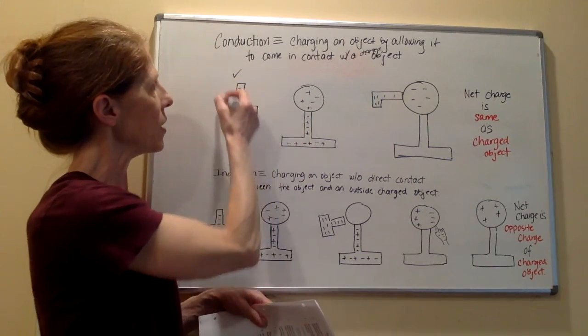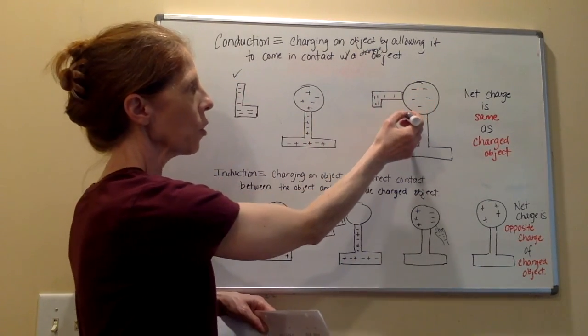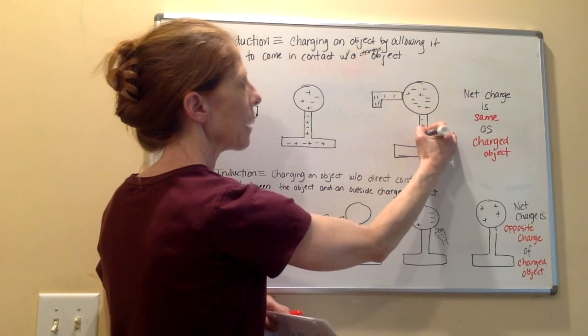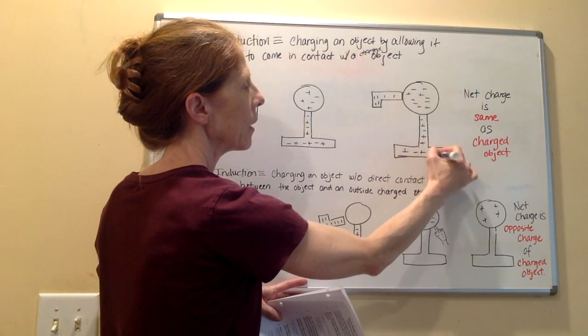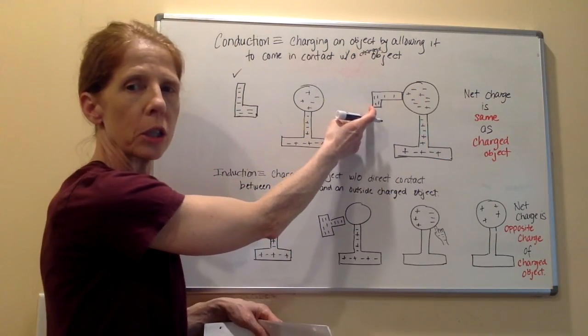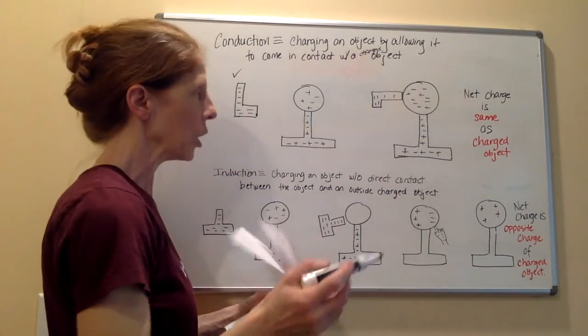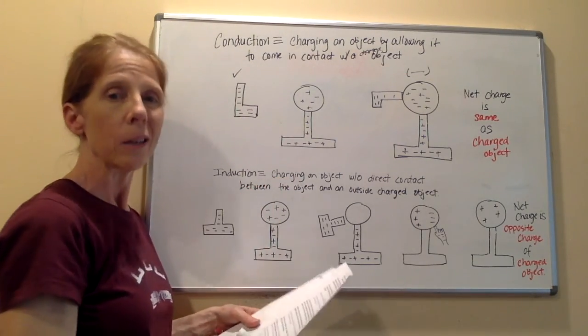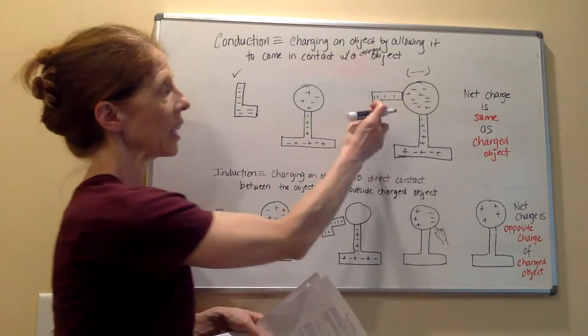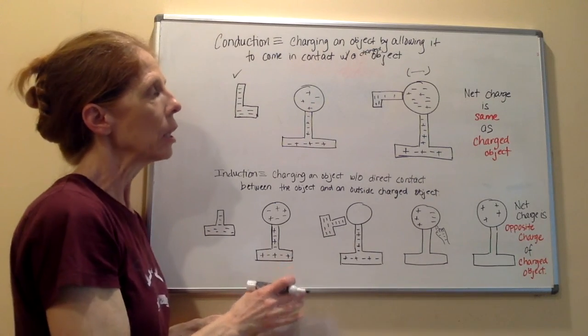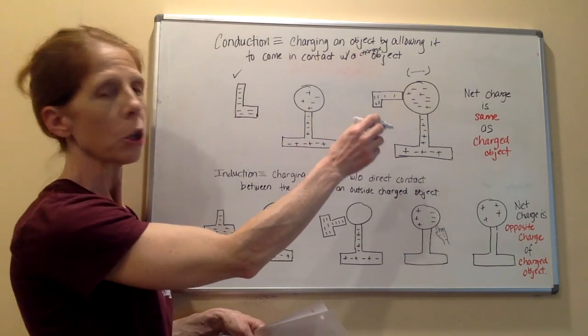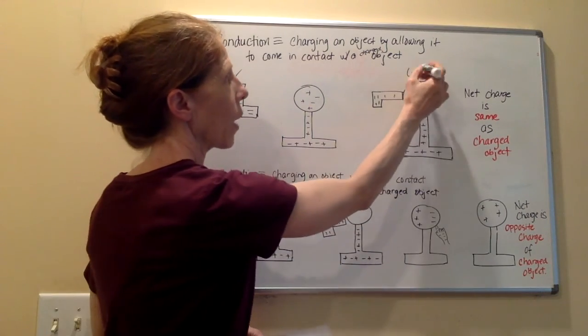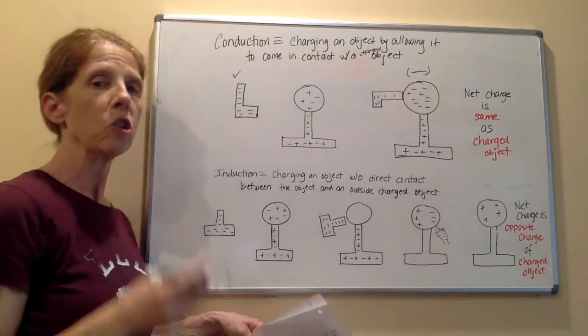To conduct this, what we would do is we would take this object and put it over here in contact with our neutral object. And what happens is we still have all the charges we had before, except now we've got an excess of negative charges. That gives this object an overall negative charge. That is charging by conduction. Charging something by allowing a charged object to touch it and basically allowing that extra charge to flow into the neutral object. Always know that the net charge through conduction will be the same as that of the charged object.